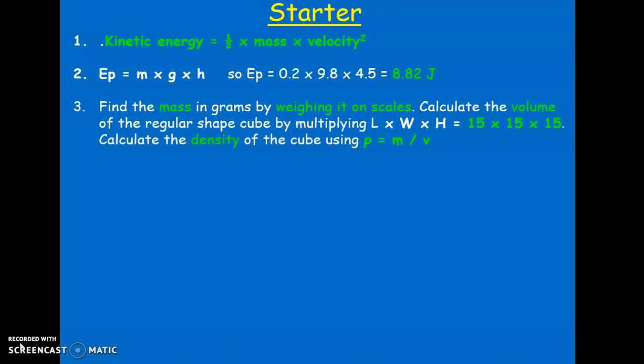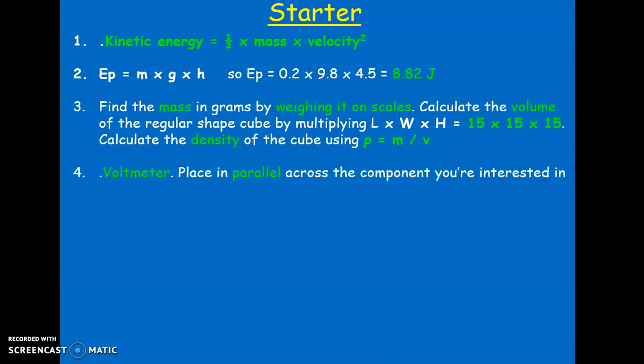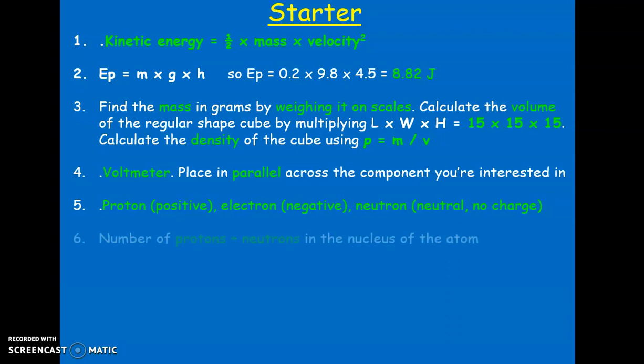Question four: potential difference is measured using a voltmeter, which is always placed in parallel across the component we're interested in. Protons are positive, electrons are negative, neutrons have no charge — they're neutral. These are the three subatomic particles. The mass number tells you the number of protons and neutrons inside the nucleus of the atom. The mass number is always the bigger number.